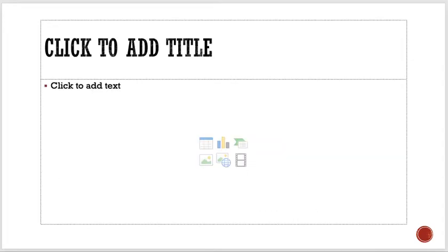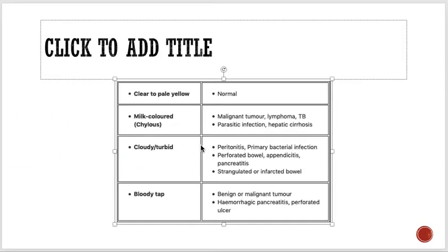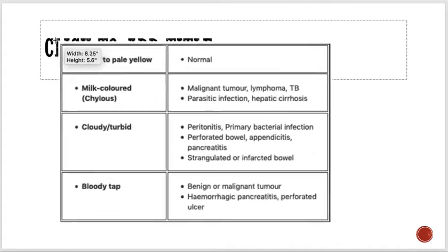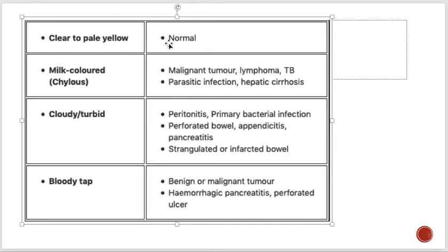Other things checked in peritoneal fluid analysis include color. Normally the fluid is pale yellow or clear. If it is milky colored, it suggests chyle, pointing to malignancy, lymphoma, TB, parasitic infection, or hepatic cirrhosis. If cloudy or turbid, it points to infection like peritonitis, primary bacterial infection, perforated bowel, appendicitis, or pancreatitis. A bloody tap could indicate benign or malignant tumors, hemorrhagic pancreatitis, or perforated ulcers.